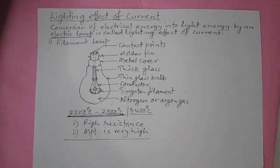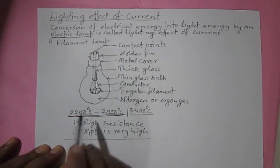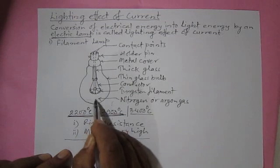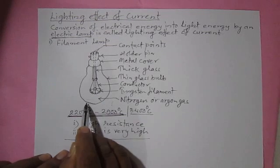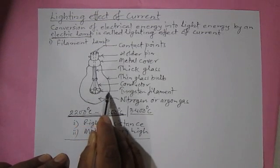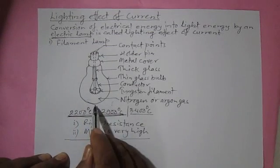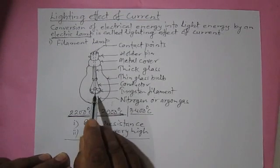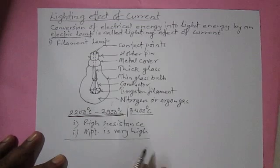We could make a vacuum inside the bulb, but if there is only vacuum — nothing inside — the tungsten filament begins to vaporize. This evaporated tungsten forms a blackened layer on the inner surface of the bulb. Because of this black layer, light cannot come out and is blocked. Therefore, to reduce the evaporation of the tungsten filament, the bulb must be filled with nitrogen or argon gas.